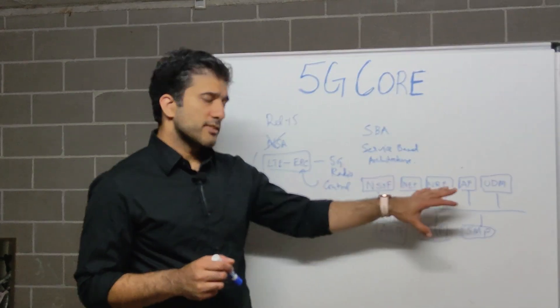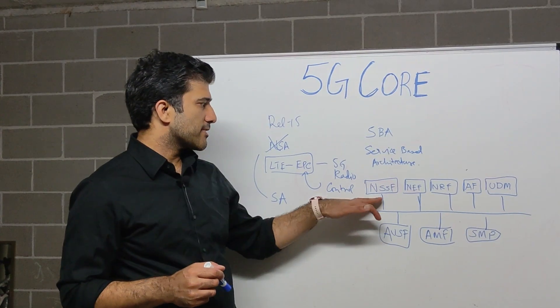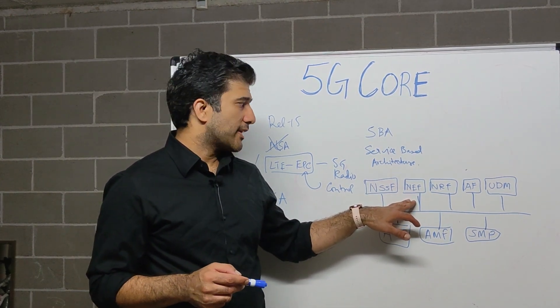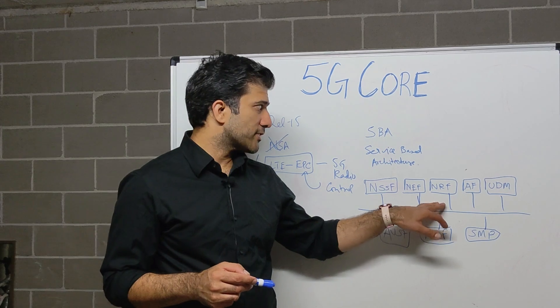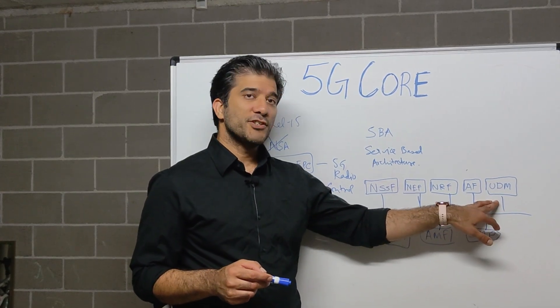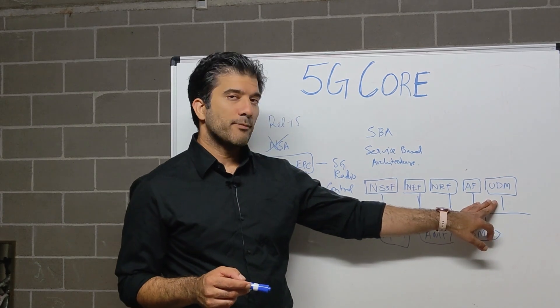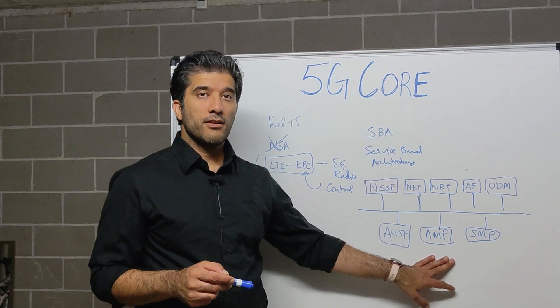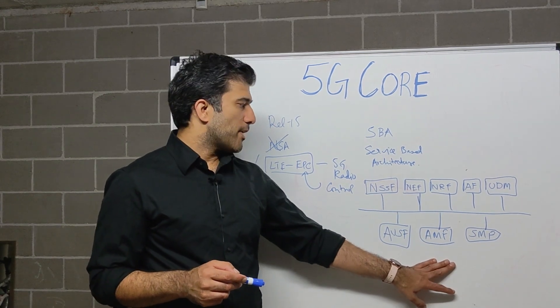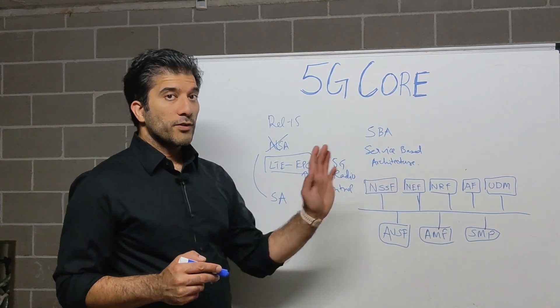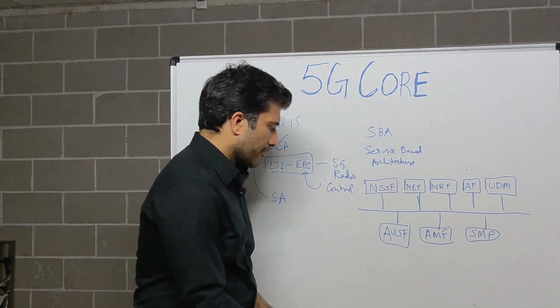So these are different functionalities. This is NSSF, the slice function. Then this is NEF, then this is NRF repository function. This is your UDM unified data management function. Then this is your data management function, authentication function. This is your AMF main mobility function, and then this is your SMF session management function. Unified data function. So this is the part of the core.